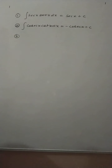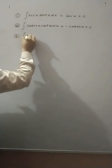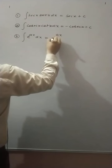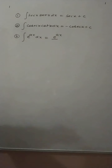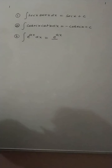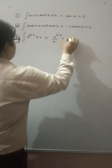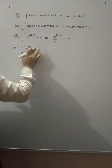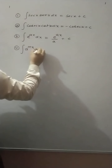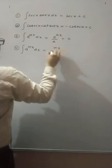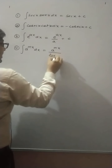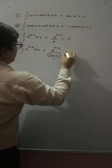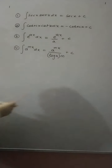Now write down the next formula: integration of e raised to power ax dx, which is equal to e raised to power ax divided by a, plus C. Next, integration of a raised to power mx dx is equal to a raised to power mx divided by log a into m, plus C, where m is any constant.